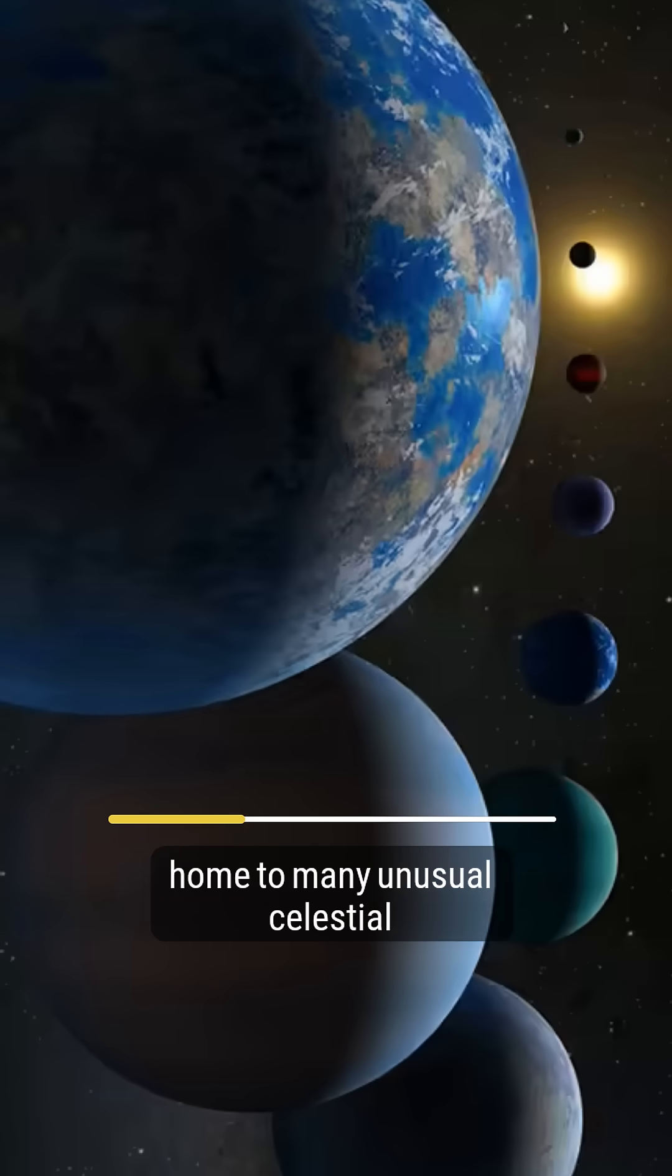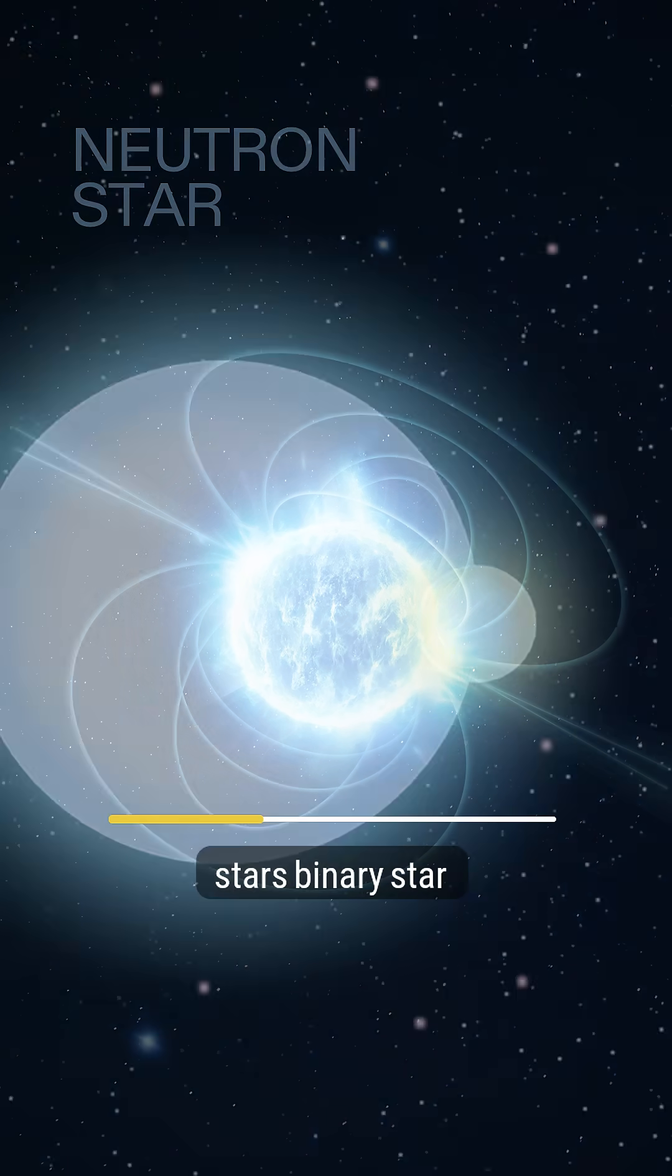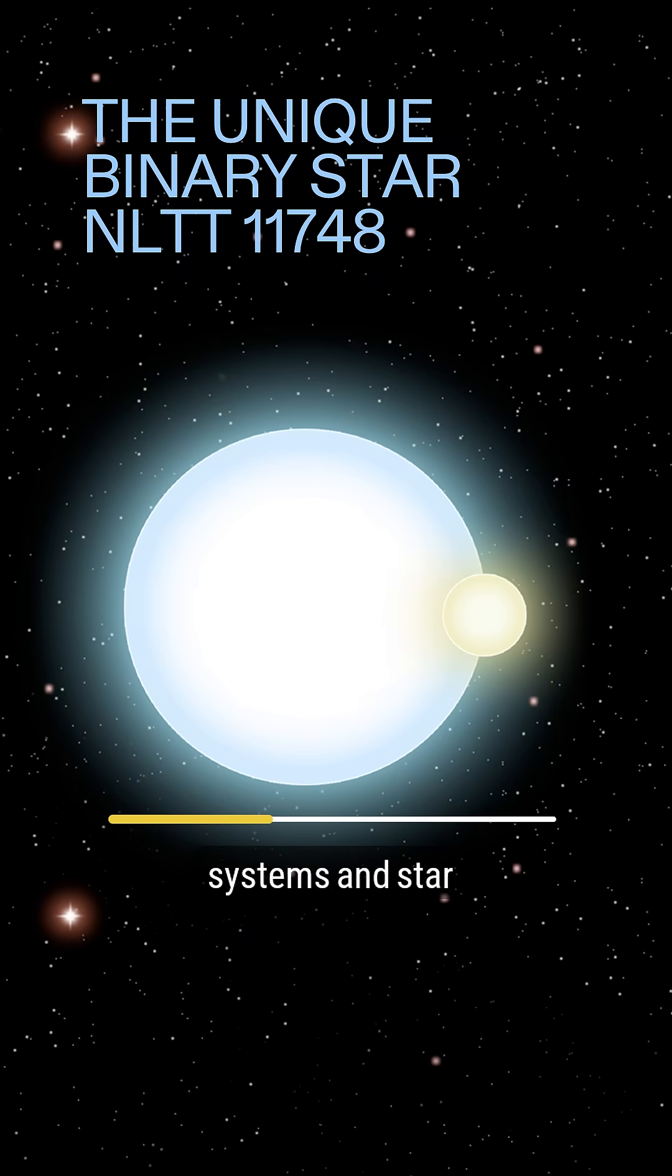The Milky Way is also home to many unusual celestial objects, such as neutron stars, binary star systems, and star-forming regions. These objects offer astronomers a glimpse into the galaxy's complex history and evolution.